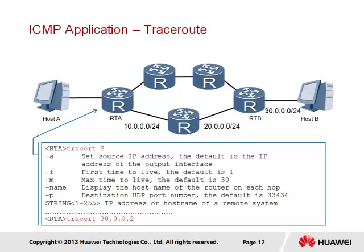Typically, three ICMP messages will be sent for each hop before the TTL value is incremented. The TTL value by default begins with the value of 1, however the -f parameter can be used to alter this as necessary. The range of the traceroute can also be limited using the -m parameter if a shorter trace is required. We demonstrate here the use of the traceroute application based on the diagram, in which the path between host A and host B — with destination address 30.0.0.2 — is determined where multiple paths may exist.